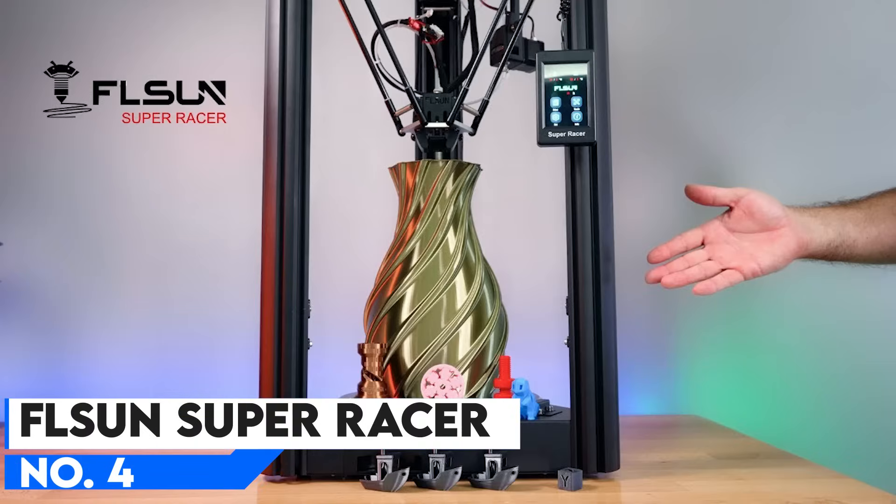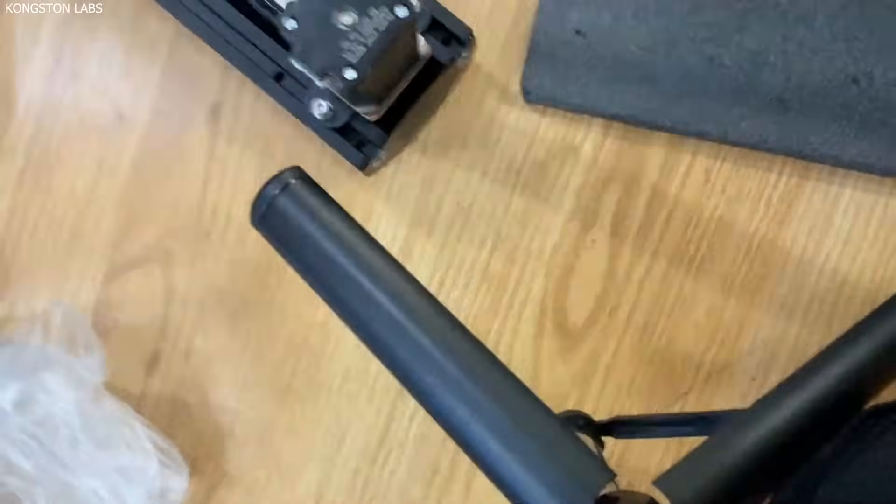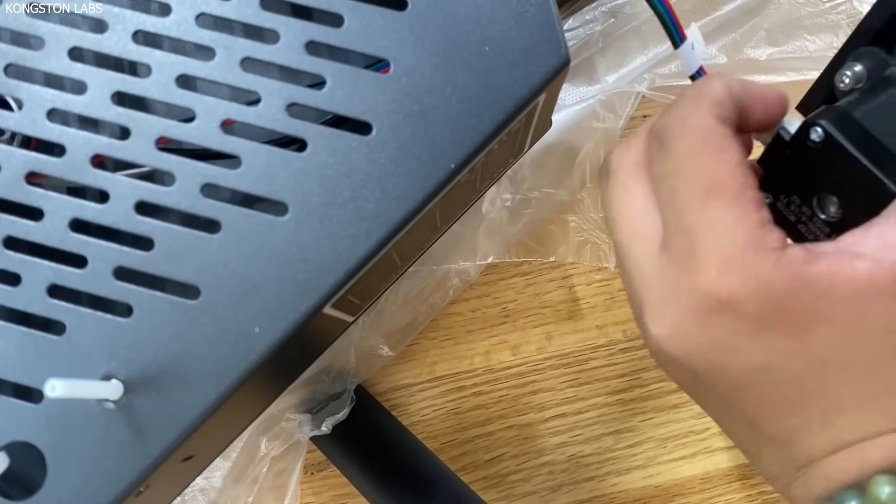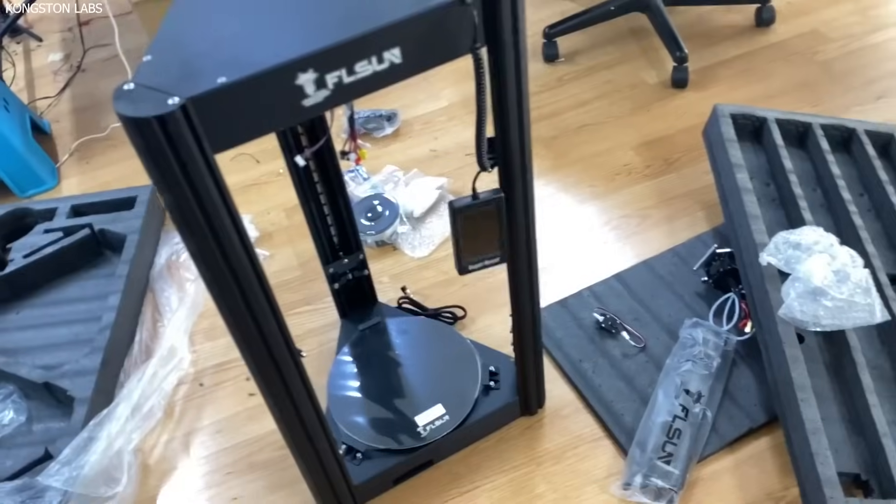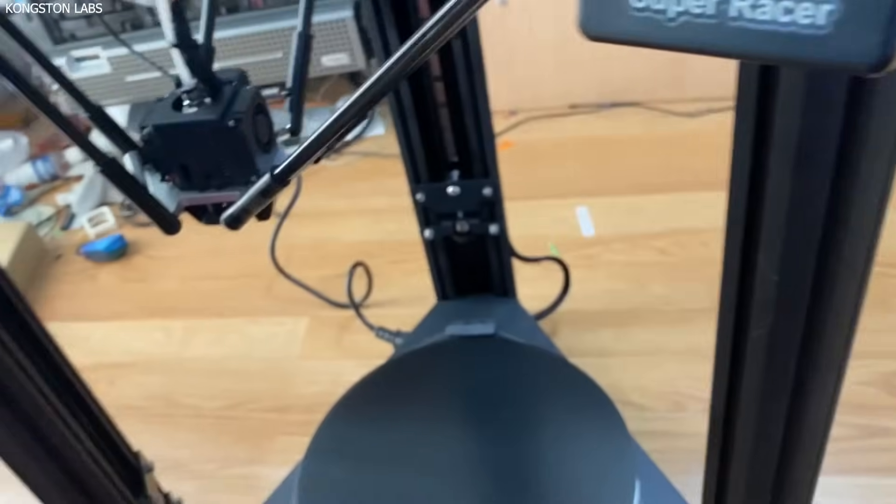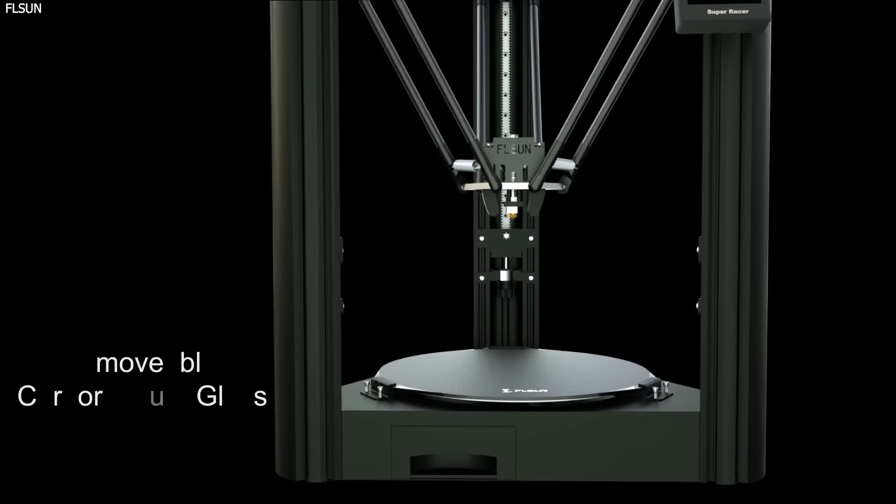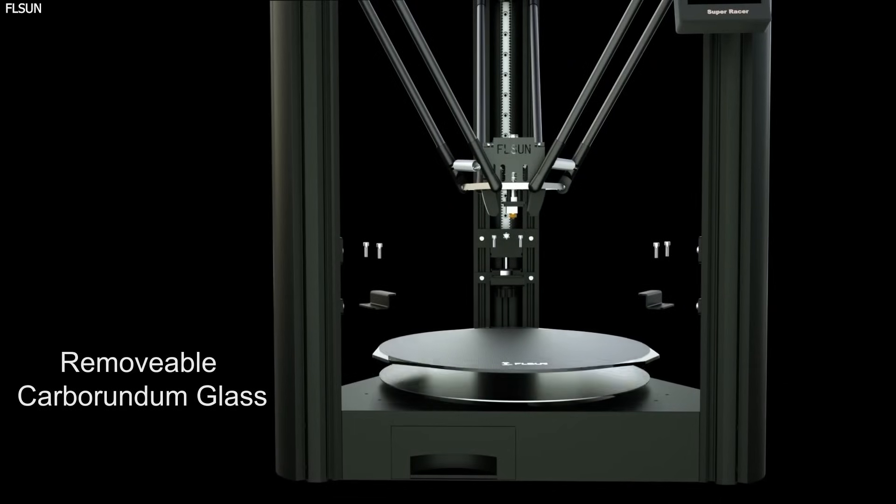Number 4: FALT LS Sun Super Racer, Best for high-speed printing. If speed is your top priority, the FALT S Sun Super Racer is one of the fastest consumer-grade 3D printers available in 2025. With print speeds reaching up to 200mm/s, this delta-style printer is perfect for those who need rapid prototyping, batch production, or artistic creations without compromising on accuracy.